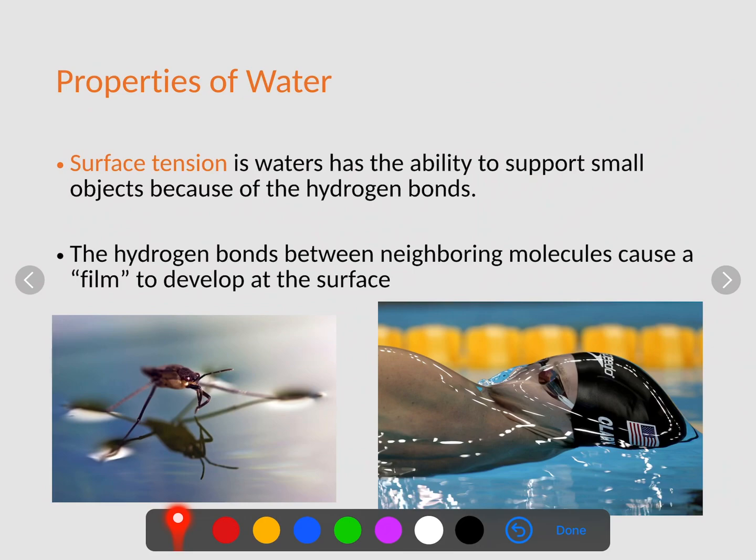Another property of water we have is surface tension. Water wants to stick to one another, so what happens is it almost acts like a film. And if you look really close right here to this water strider, you can actually see how the water is being indented. So the hydrogen bonds between neighboring molecules cause a film to develop and some animals can actually walk on it.